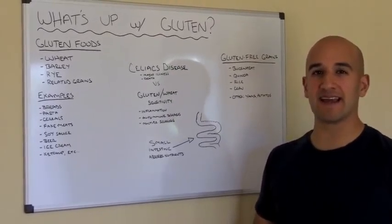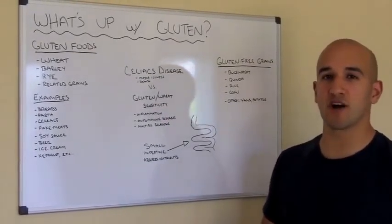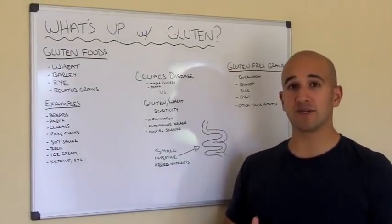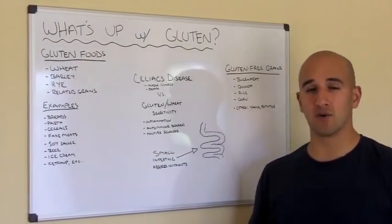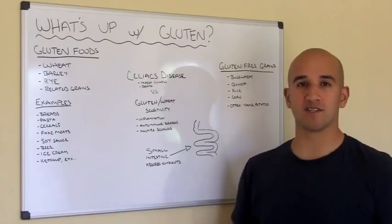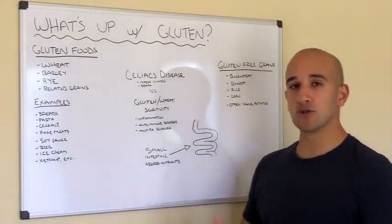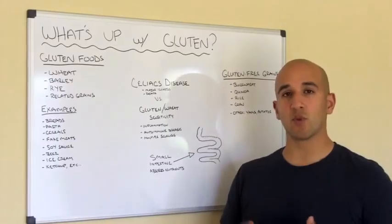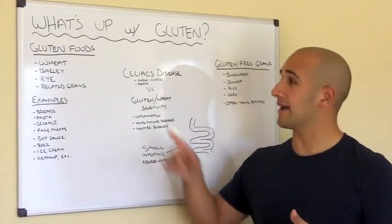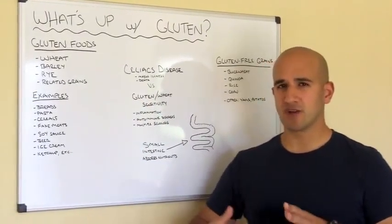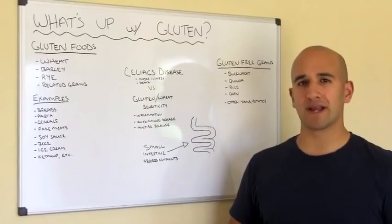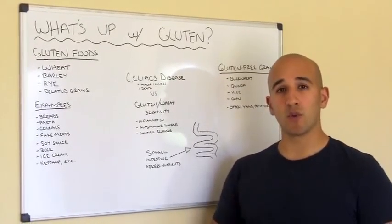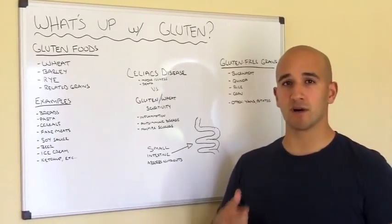Hey, I'm Steve De La Torre and today we're going to talk about gluten. A common question I get, especially more now than before, is: what's up with gluten? Gluten is a protein found mostly in wheat, rye, and also in barley. It's also in a few other grains — spelt and a few other related grains — but mostly wheat foods are going to be your biggest source.